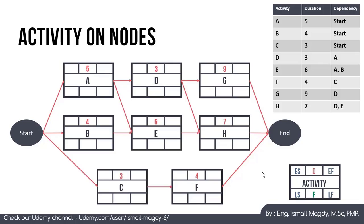For the forward pass: Activity A depends only on the start, so Early Start = 0, duration = 5 days, Early Finish = 5. Activity B has Early Start = 0, duration = 4, Early Finish = 4. Activity C has Early Start = 0, duration = 3, Early Finish = 3. Activity D depends on A, so Early Start = 5 (EF of A), duration = 3, Early Finish = 8.